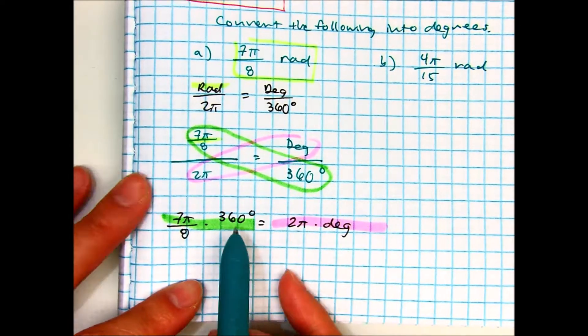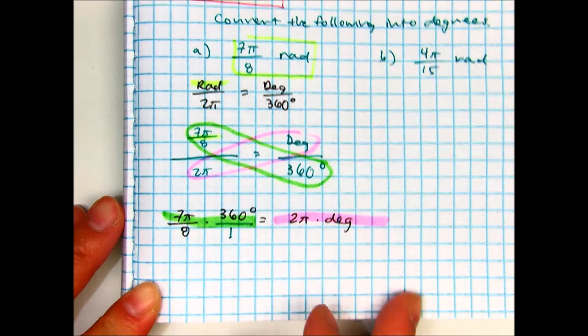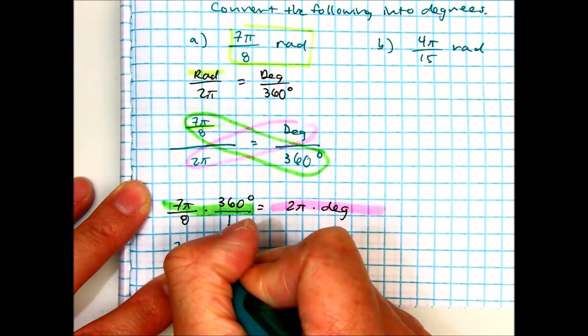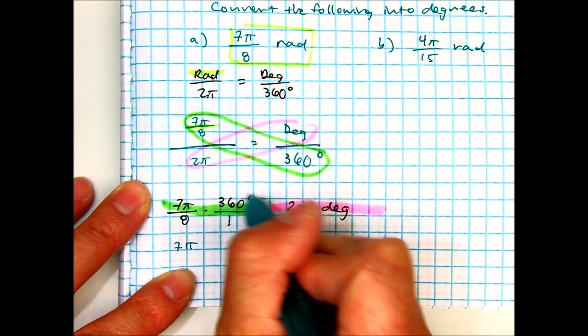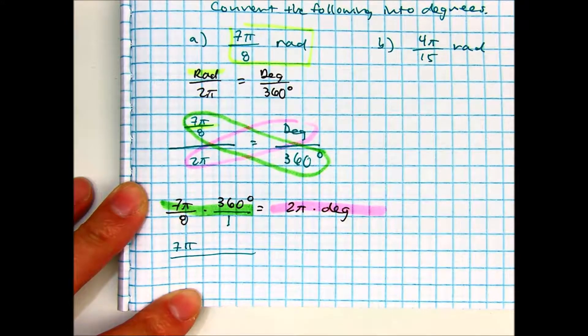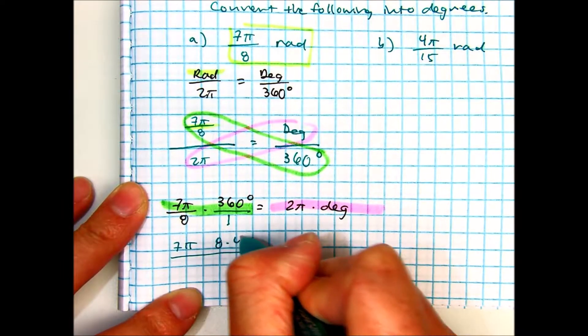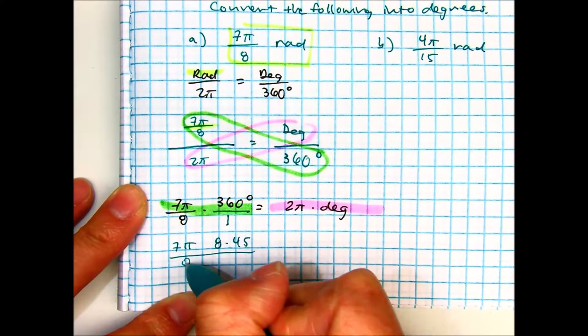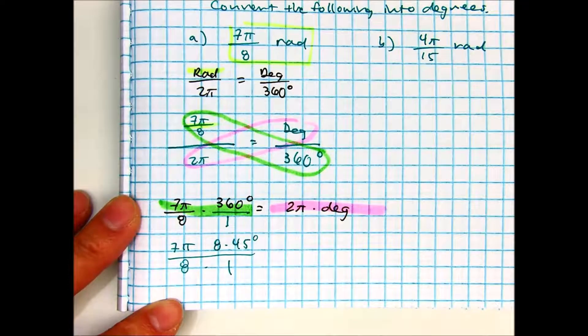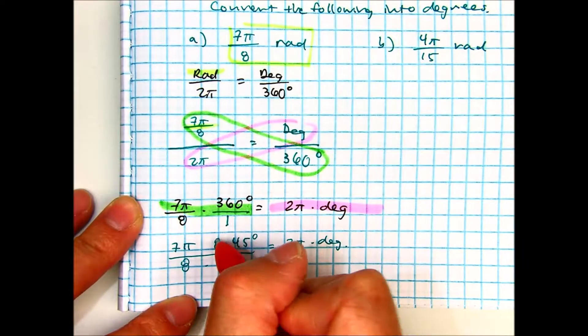Alright, what did you guys make this one? Over 1. Over 1, so make it a fraction. Okay, now what? What did you turn the 8 into? Does 360 have a factor of 8? What is it? Yep, so 8 times 45, and this one is 8 times 1. And over here, I just have 2π times degrees. Let's cancel here. Cancel.